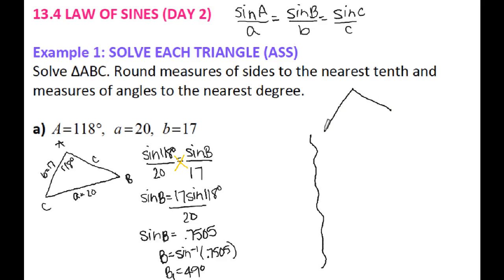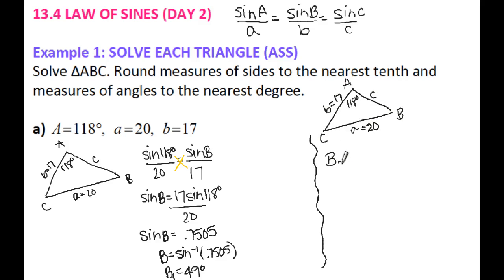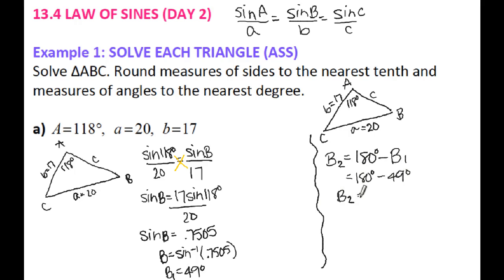I'm going to sketch out a second possible triangle using the same given information: angle A is 118, side A is 20, side B is 17. The second possible solution for angle B is the supplement of the first solution. Supplementary angles add up to 180, so B2 equals 180 minus 49, which is 131 degrees.